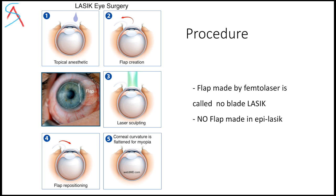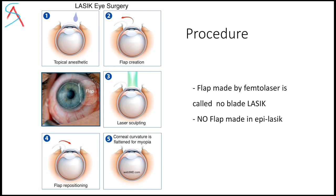What happens in LASIK surgery is they cut your cornea, they make a flap out of it, then they put the laser beam and burn it with the laser, reduce its thickness, change its shape, and put the flap back. If the flap is made by a laser, they call it no-blade LASIK. If the flap is not made and the laser is applied directly above your intact cornea, they call it epi-LASIK. Overall, all LASIK surgeries change your cornea shape and make it thin.